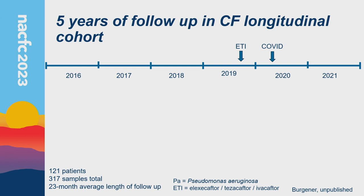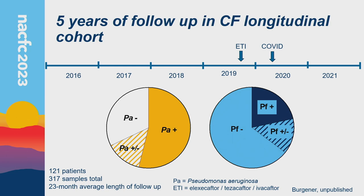We now have five years of follow-up. The expanded cohort has 121 patients spanning 2016 to 2021, noting that ETI received FDA approval towards the end and COVID altered sample collection. We had over 300 sputum samples. More than half of patients had Pseudomonas in every sputum sample by qPCR, a little more than a quarter never had Pseudomonas, and a remaining wedge sometimes had it. About 25% always had phage in their sputum. Importantly, I never detected PF phage in a sputum sample if I didn't detect Pseudomonas.